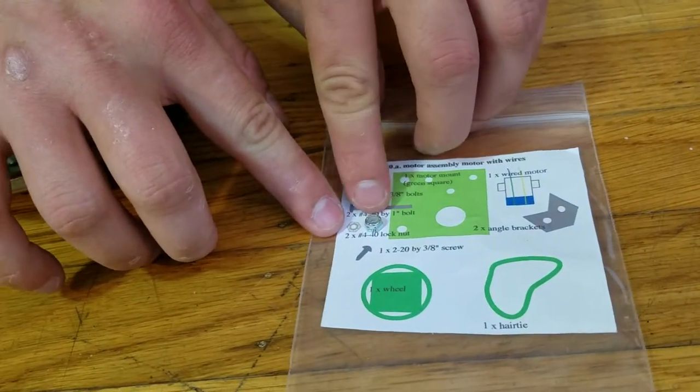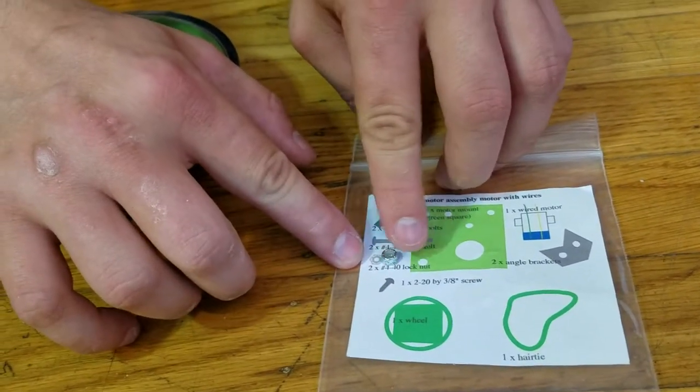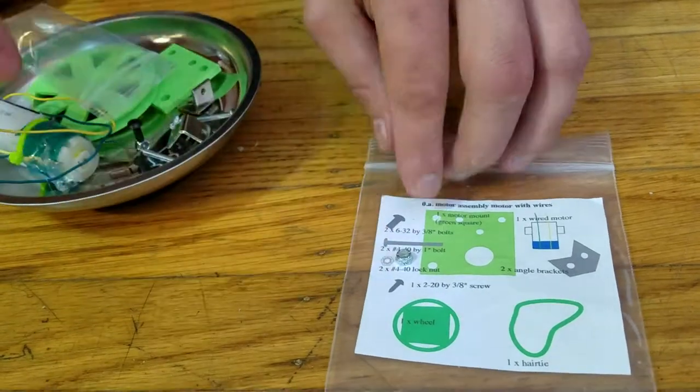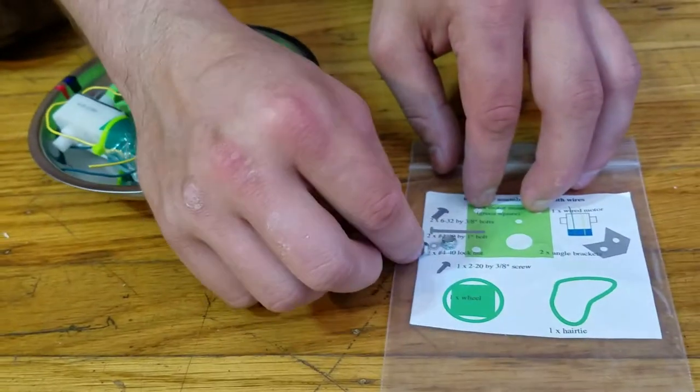See this little thing? There's two 440 lock nuts. This thing is a 440 lock nut because it looks like that thing on the label. There should be a second one. Here it is. So there's two of them.